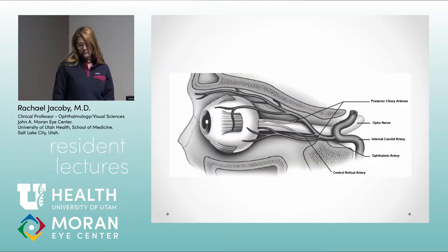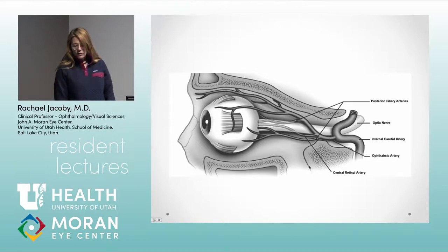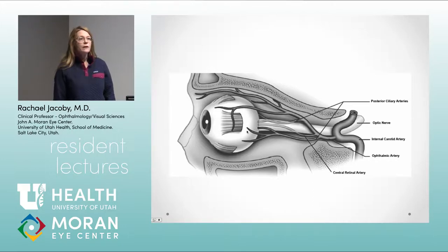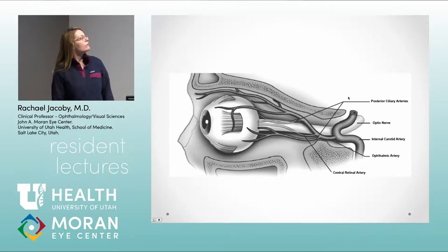To refresh the anatomy: the ophthalmic artery gives rise to the central retinal artery and the posterior ciliary arteries, and both arise from the internal carotid. So if you have an occlusion at the internal carotid, you're going to get a reduction in blood flow that provides blood to both the anterior and posterior segments, as well as the retinal and choroidal circulation.